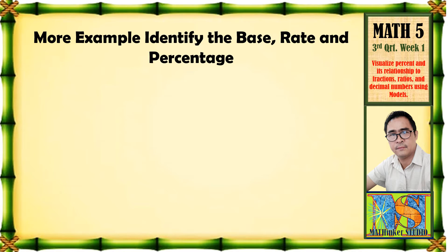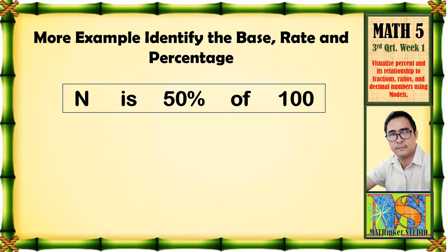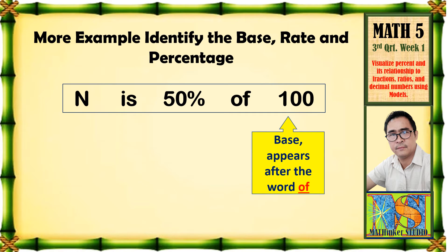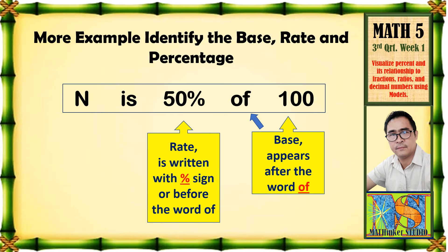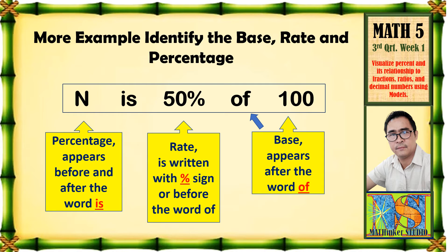Tingnan naman natin itong example: N is 50% of 100. Unahin natin yung 100 — may salitang 'of,' bago yung 100, so ang 100 ay ang tinatawag nating base dahil may salitang 'of' sa unahan nito. Next, ang 50% — automatic, pag meron siyang percent sign, ito yung tinatawag nating rate. At yung nawawala — siyempre, ang letter N ang ating percentage, dahil it appears before the word 'is.'